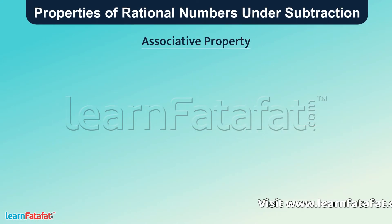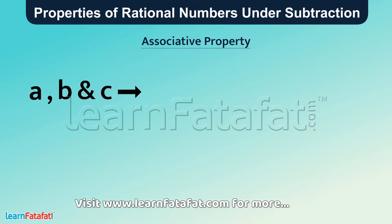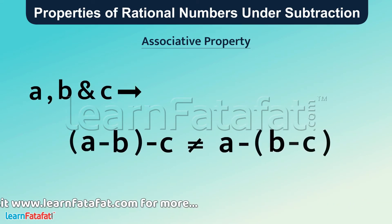Associative Property: Rational numbers a, b, and c cannot be grouped in any way. (a minus b) minus c is not equal to a minus (b minus c). The order of subtraction must be followed.